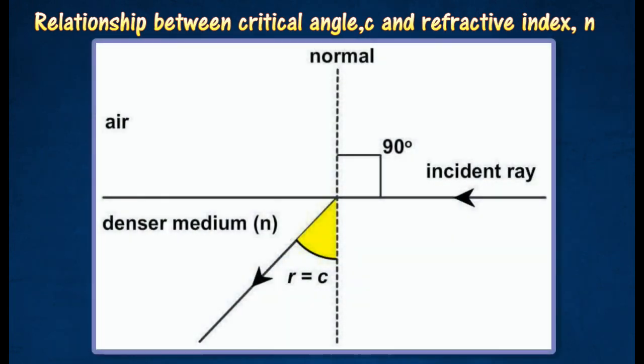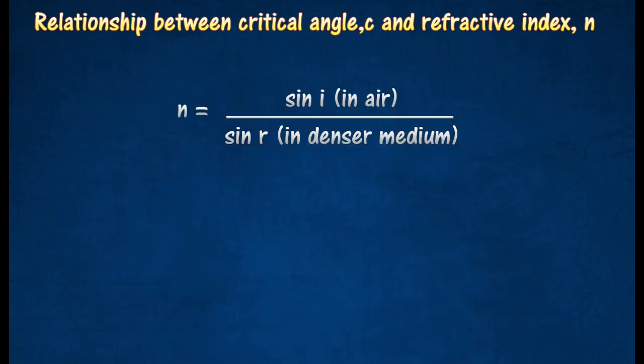the incident ray travels from air to the medium. Thus, the path of the ray of light is reversed as shown in the diagram. Light traveling in reverse direction at an angle of incidence of 90 degree will be refracted along the same path at an angle of refraction equal to c.